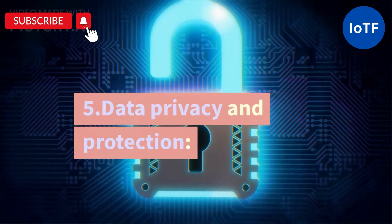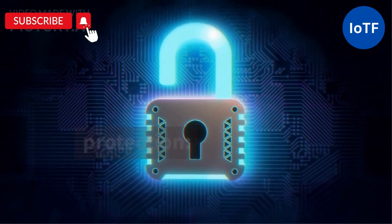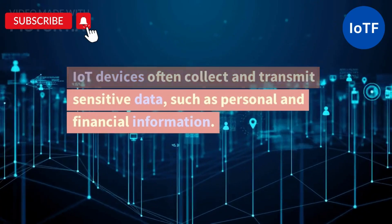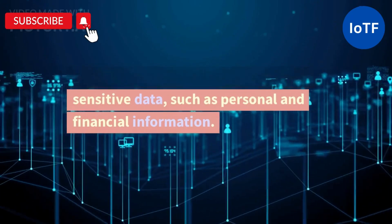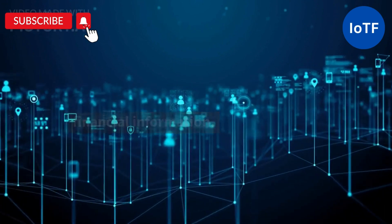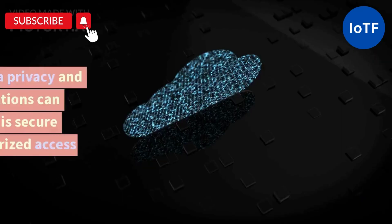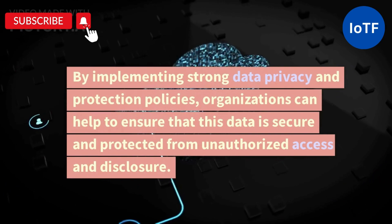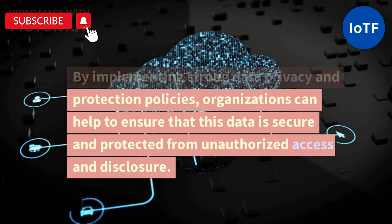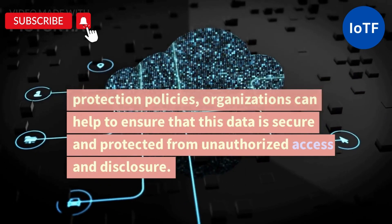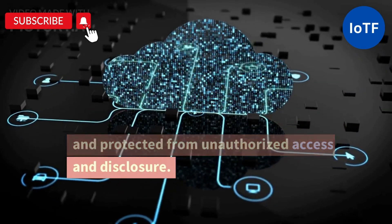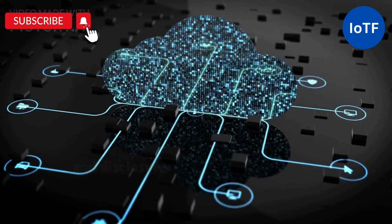5. Data Privacy and Protection. IoT devices often collect and transmit sensitive data, such as personal and financial information. By implementing strong data privacy and protection policies, organizations can help to ensure that this data is secure and protected from unauthorized access and disclosure.